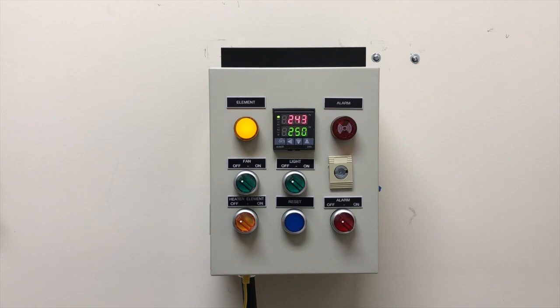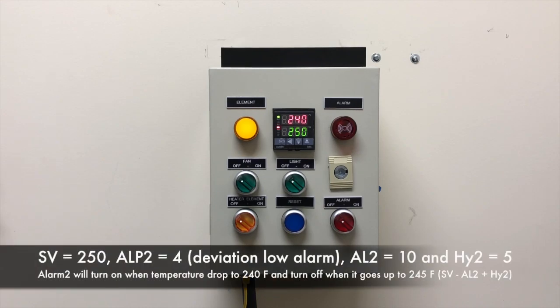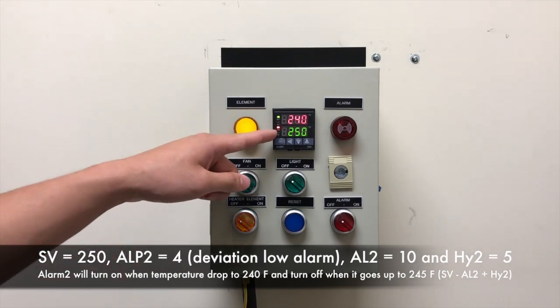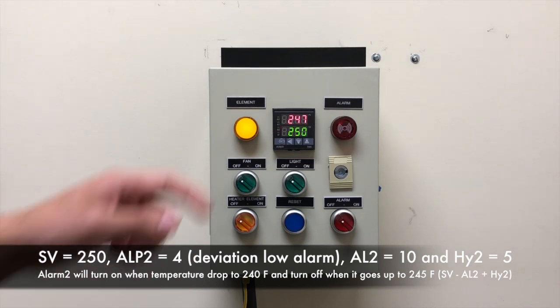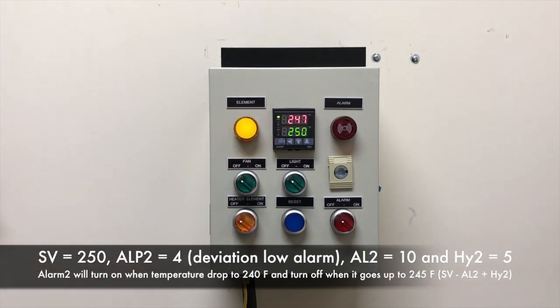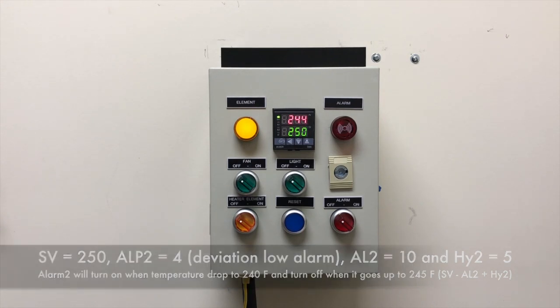You can see the AL-2 indicator is lit when the temperature reaches 240 degrees Fahrenheit, and the indicator is turned off once the temperature goes above 245 degrees.